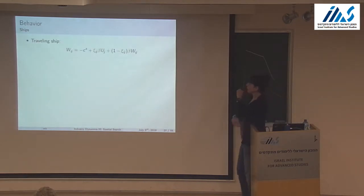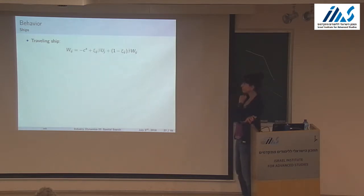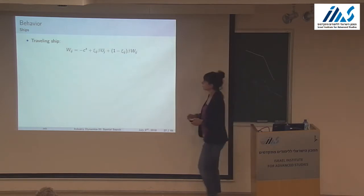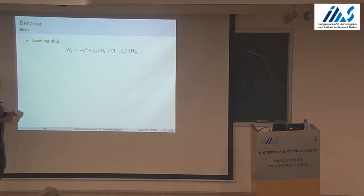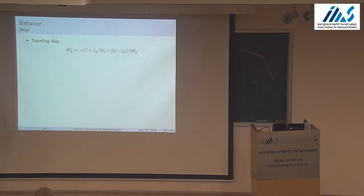Now the value functions. A traveling ship's value function W: if you're traveling from I to J, you pay the sailing cost; with probability xi_{IJ} you arrive at J and start unmatched at J, getting the value of being unmatched at J; with probability 1 minus xi you don't arrive and are a traveler again tomorrow. The value U of being unmatched in region I: you pay a port cost, and with probability lambda given by the matching function you meet someone and get the matched value.